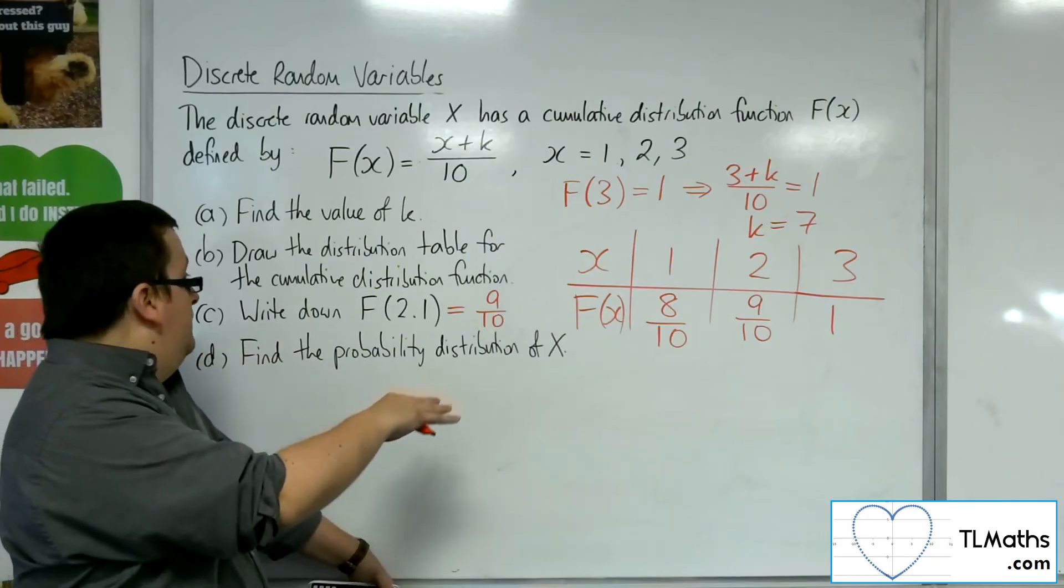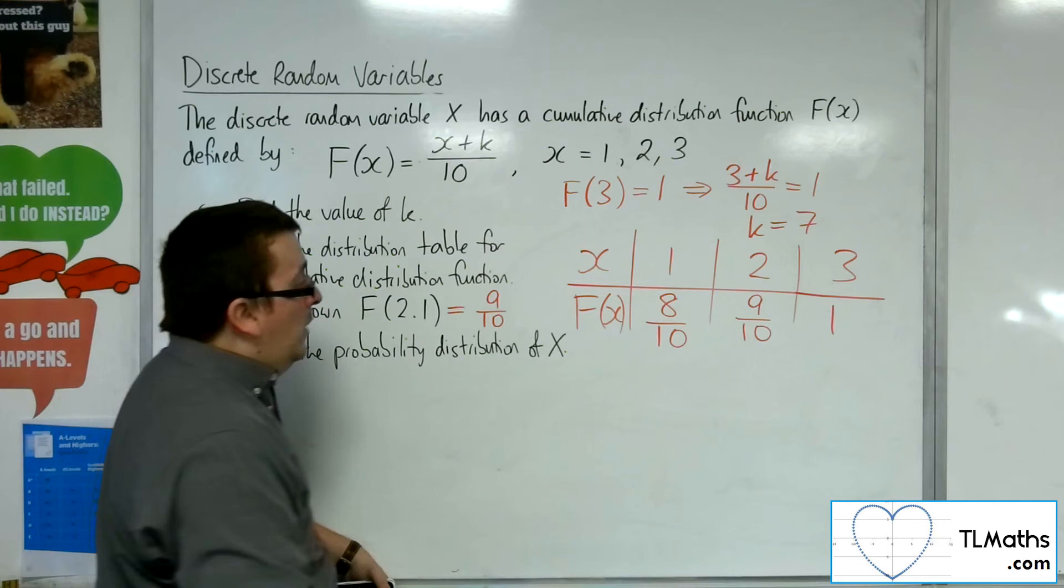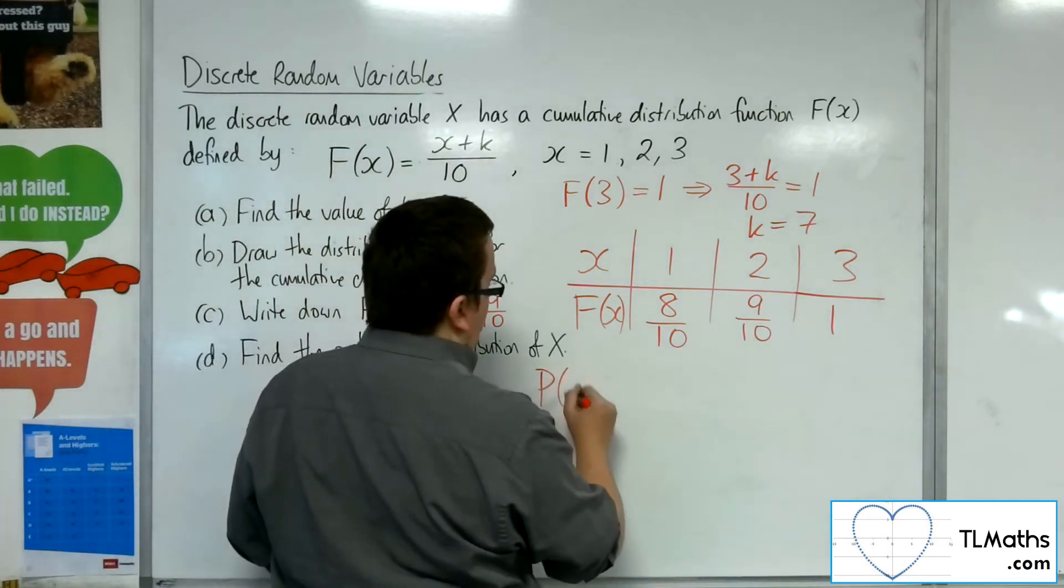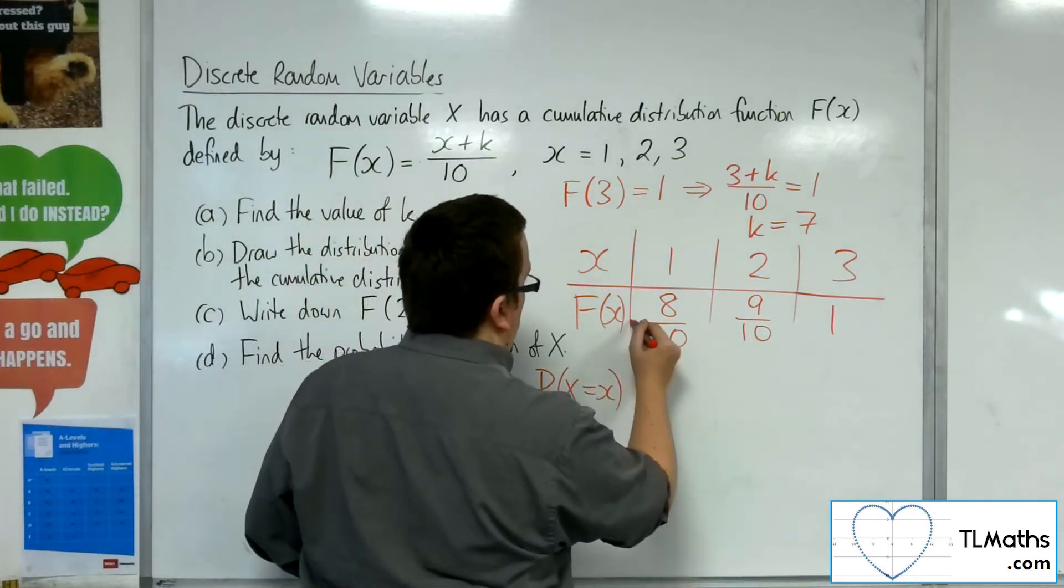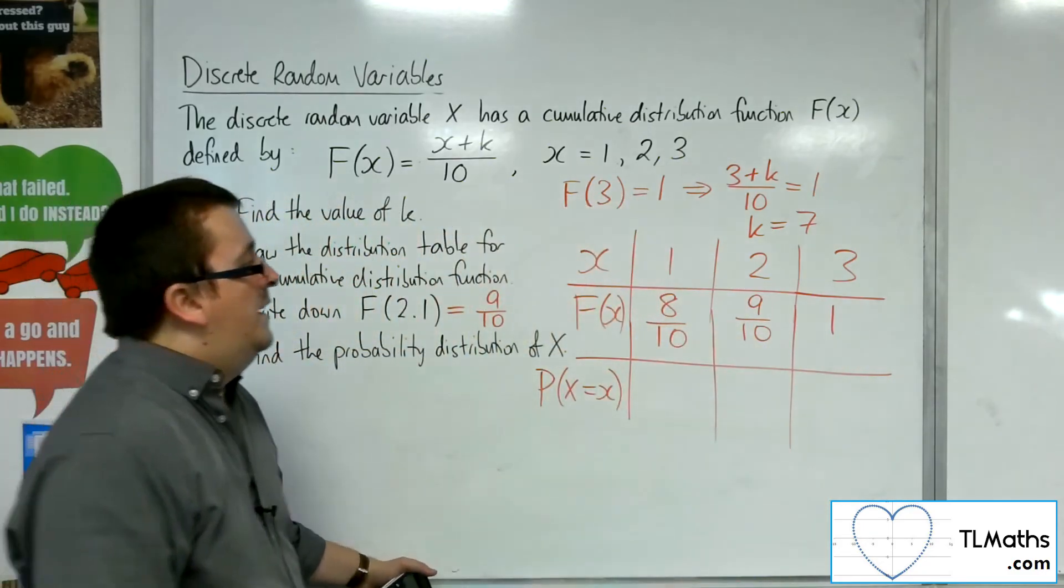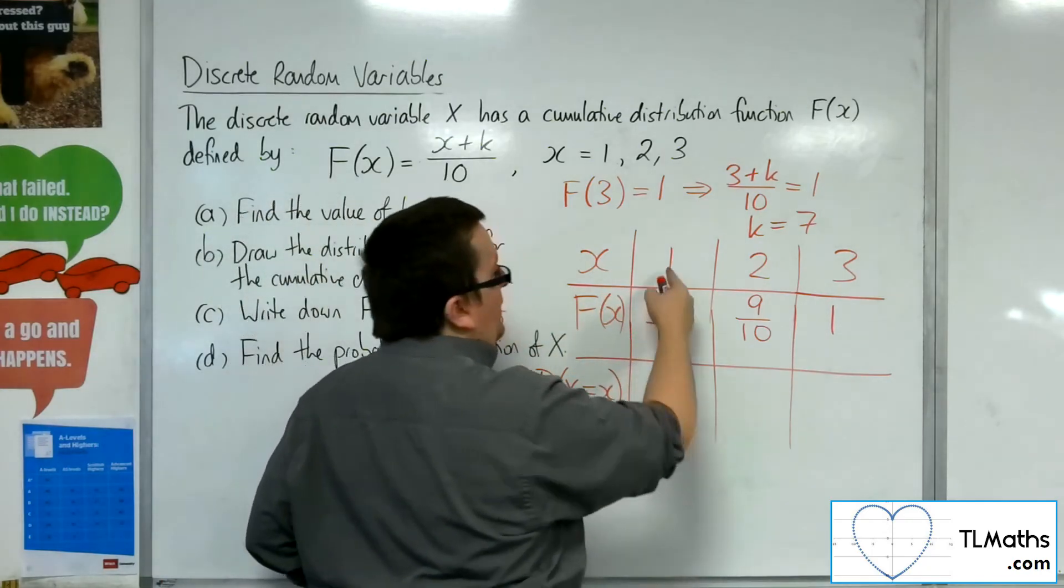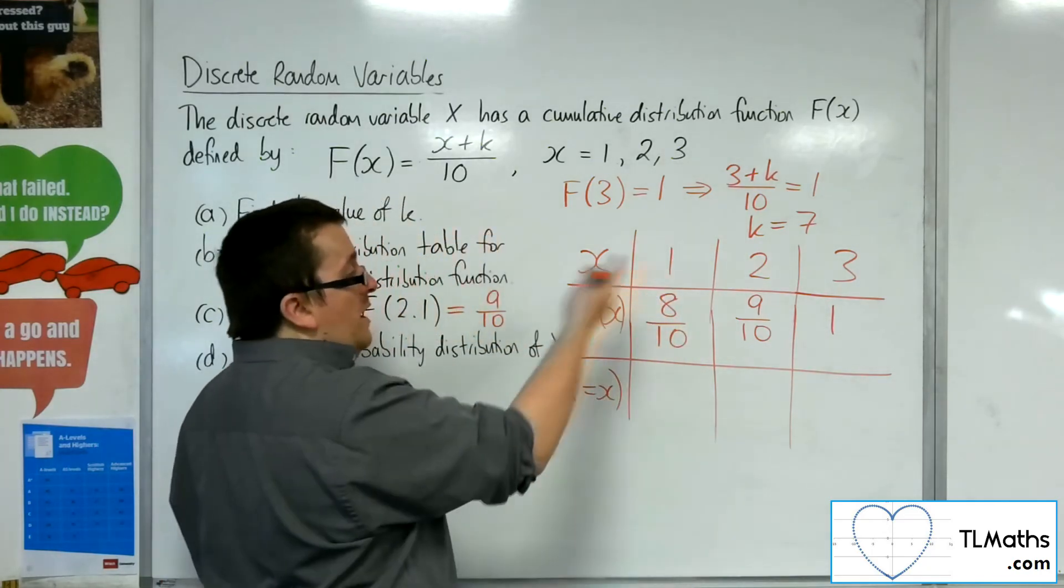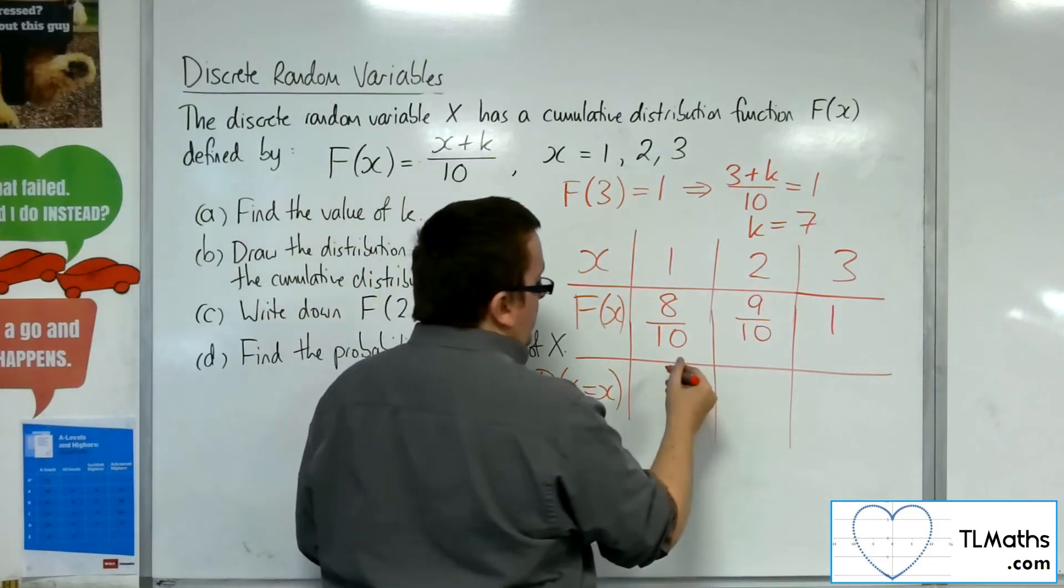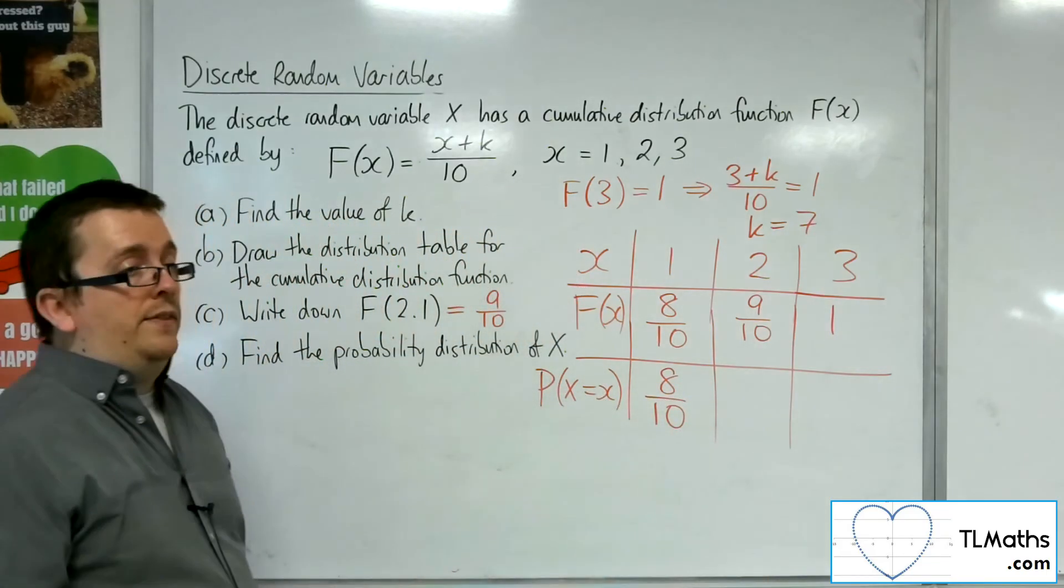So for part D, find the probability distribution of x. Well, if we add in a third row, then I know that if f of 1 is 8 tenths, that's less than or equal to 1. There's nothing else that it could be, so that means that the probability of 1 has got to be 8 tenths.